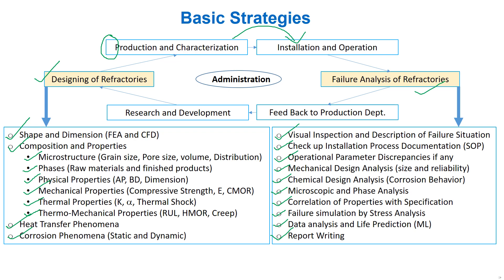A cumulative report can be written through a combination of both design parameters and failure parameters. Such a report can be communicated to the production department and subsequently forwarded to the R&D section for further improvement if required. This is a continuous loop, and when a product is established for a particular application, we can finalize the product with relevant specifications and SOP.